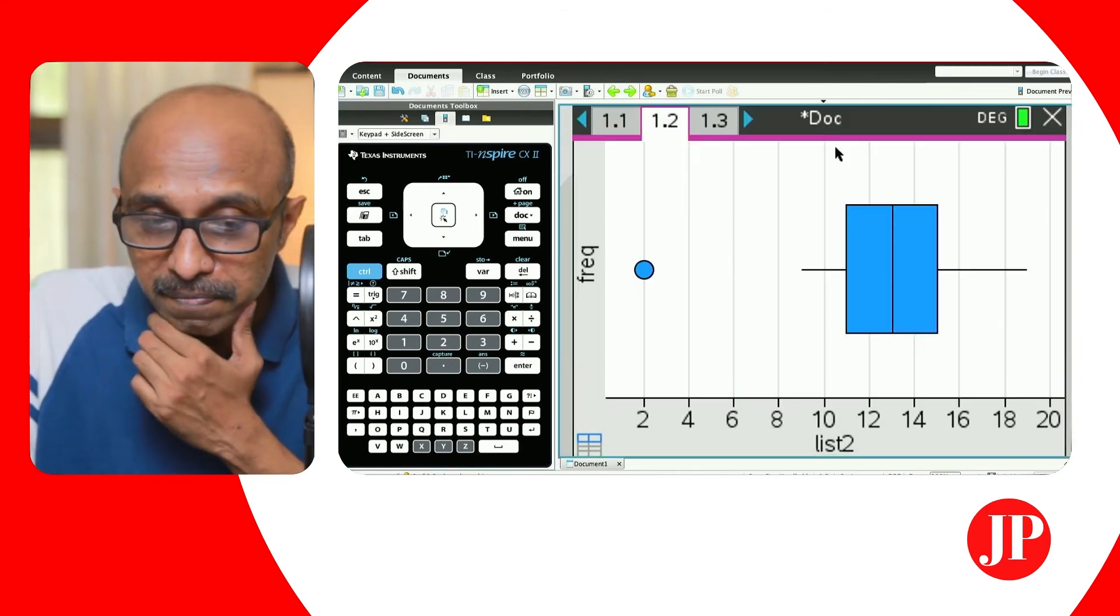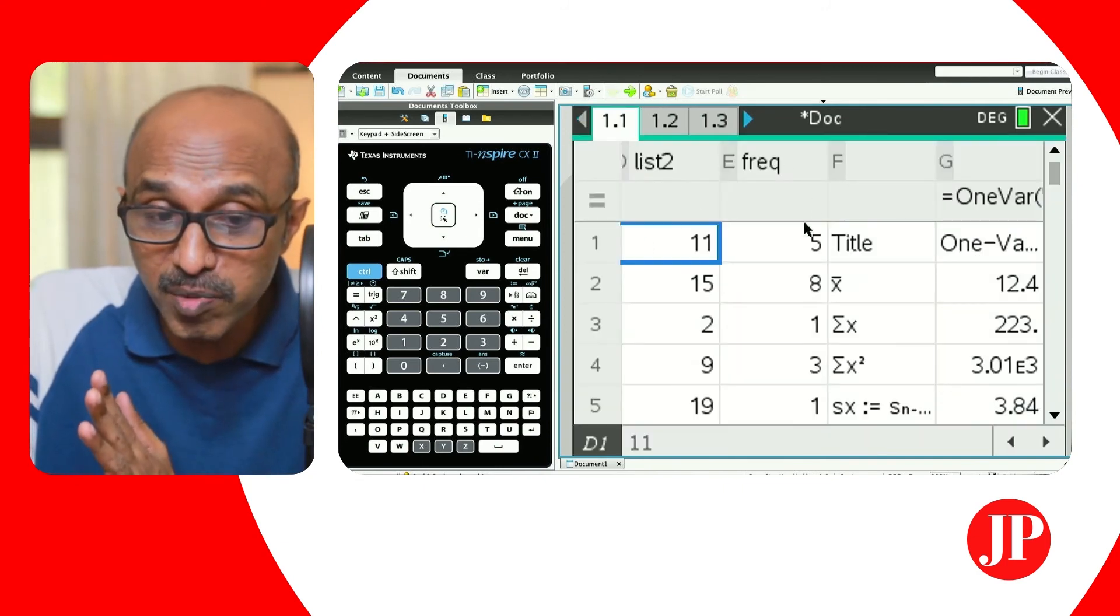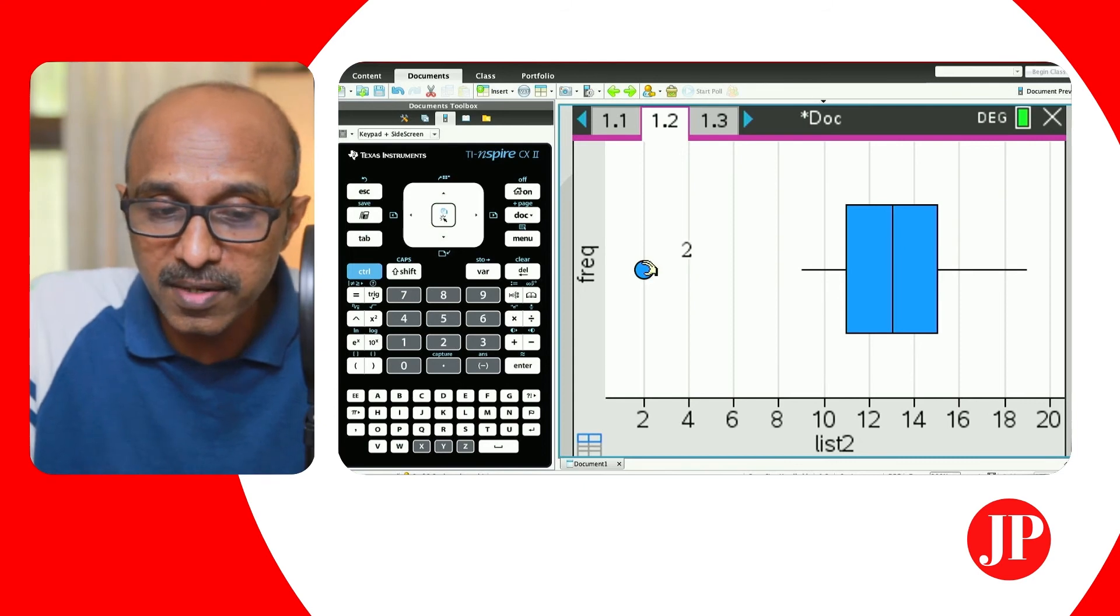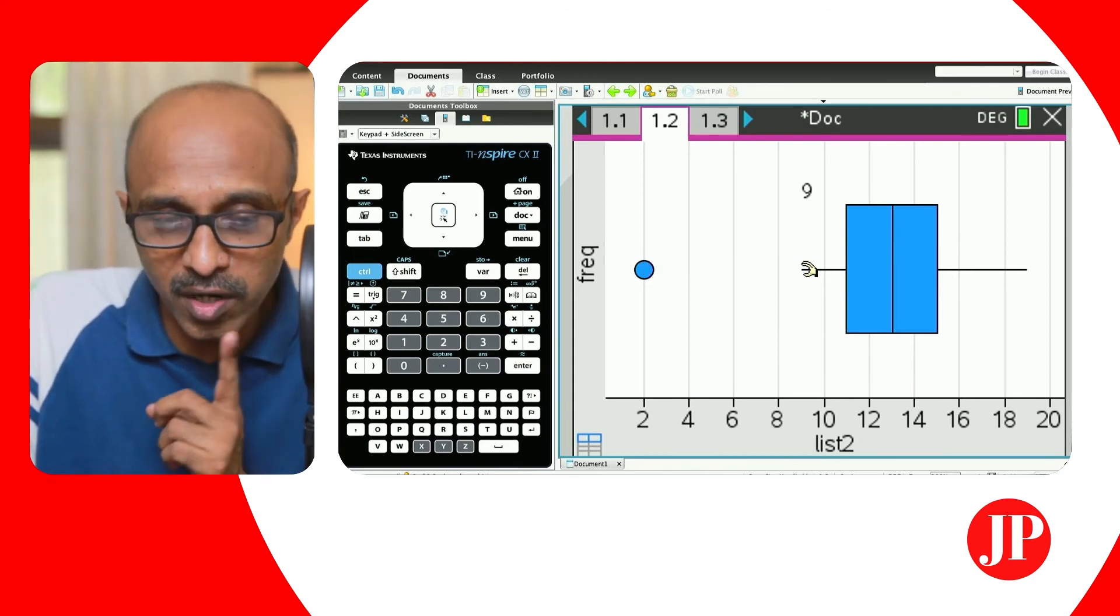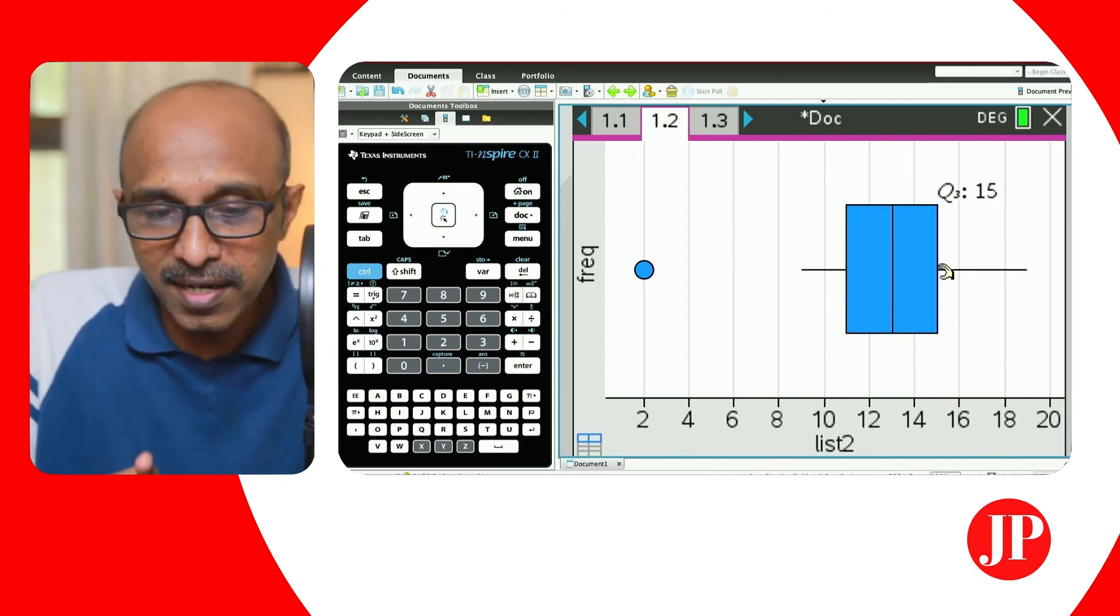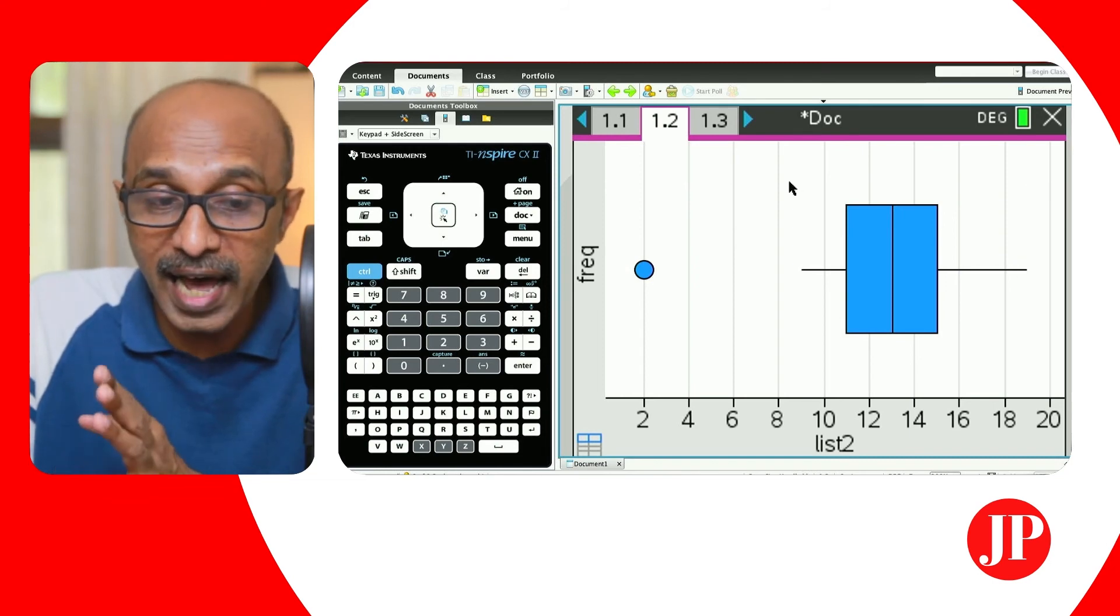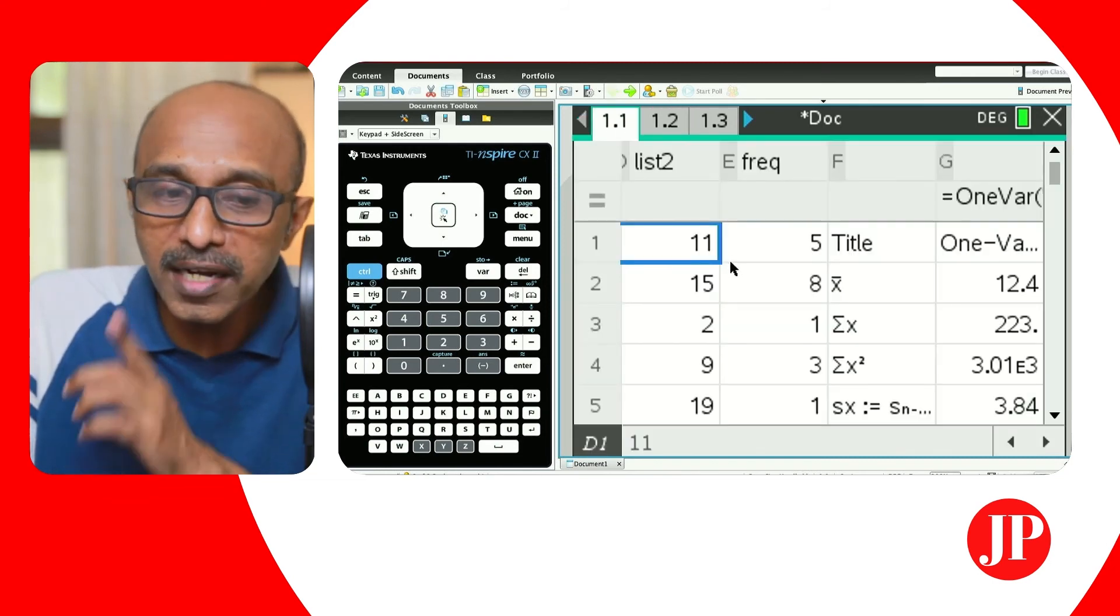That information, that data that I had, that frequency distribution that I had automatically is converted into a box and whisker plot. That obviously looks like an outlier. That's your first quartile. Sorry, that's the minimum value. This is your first quartile. This is the median, the upper quartile. And that should be the maximum value of that frequency distribution. So that is pretty cool.